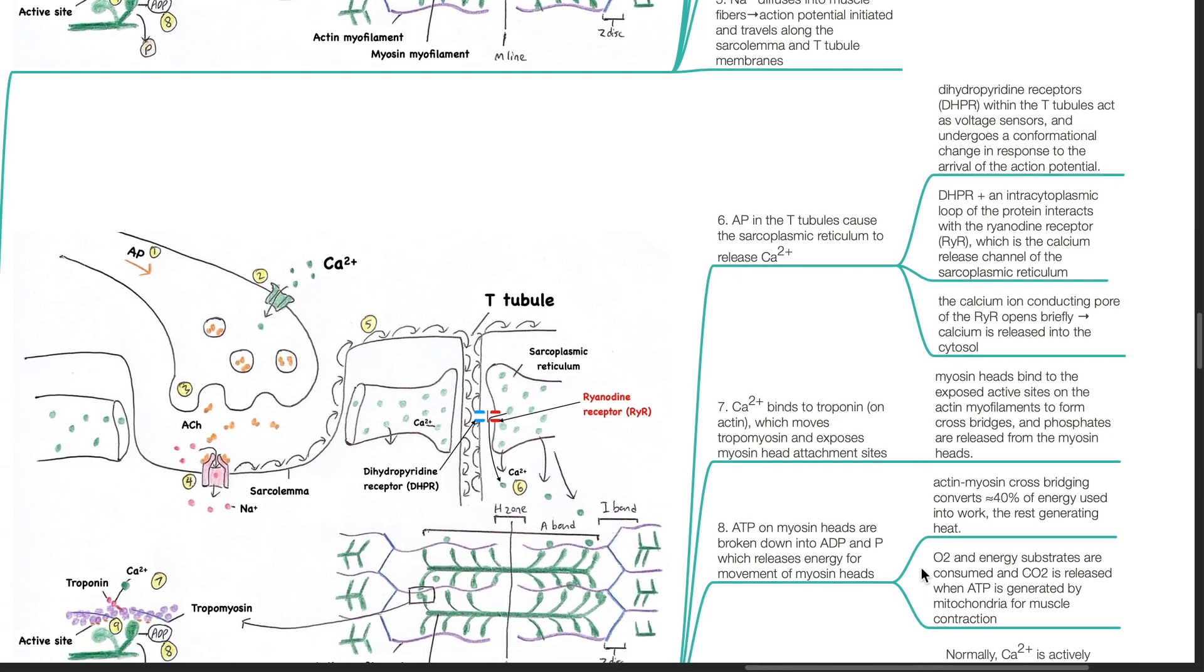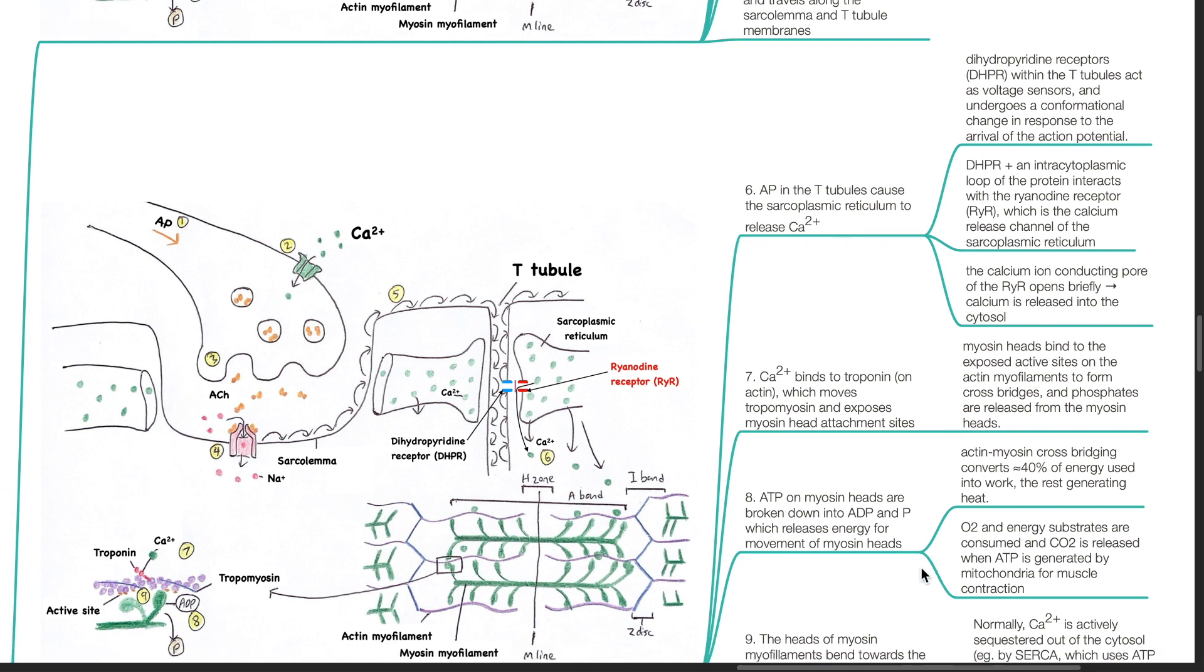Action potential in the T-tubule causes the sarcoplasmic reticulum to release calcium. Dihydropyridine receptors within the T-tubules act as voltage sensors and undergo a conformational change in response to the arrival of the action potential. DHPR plus an intracytoplasmic loop of protein interacts with the ryanodine receptor RYR which is the calcium release channel of the sarcoplasmic reticulum. The calcium ion conducting pore of RYR opens briefly and calcium is released into the cytosol.